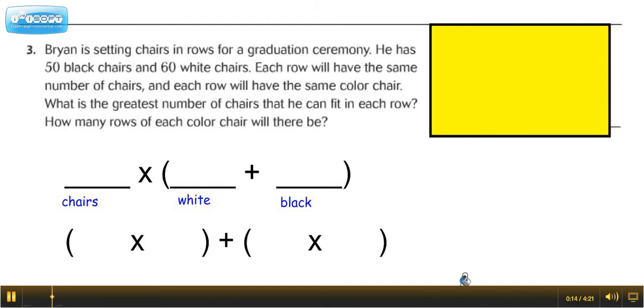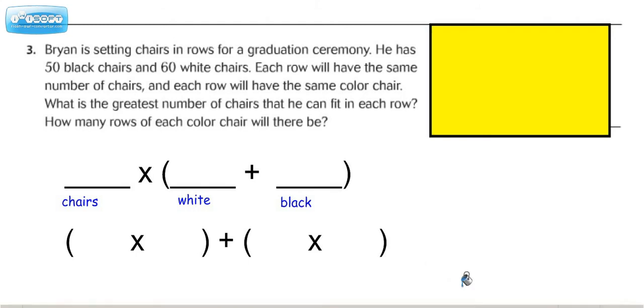It says Brian is setting chairs in a row for a graduation ceremony. He has 50 black chairs and 60 white chairs. Each row will have the same number of chairs and each row will have the same color chair. What is the greatest number of chairs he can fit in each row? How many rows of each color chair will there be?